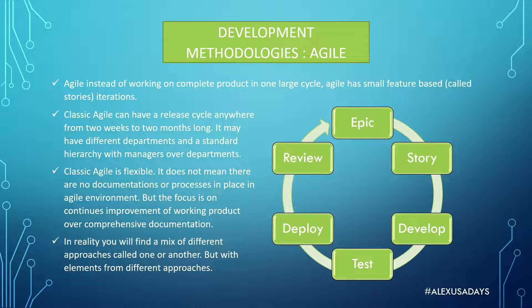So instead of working on a complete product in one large cycle like Waterfall — from start to end, pushing out a monolith product with rare updates — Agile has small feature cycles. Those iterations start with an Epic, which is essentially the idea of what we're going to bring. An Epic includes multiple stories within it that describe the behavior of what a feature should do. For example, if you want to add a new type of account for YouTube, like a manager's account that can manage other YouTubers, you'll have to create a profile and a special login.